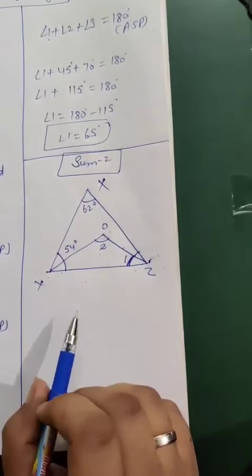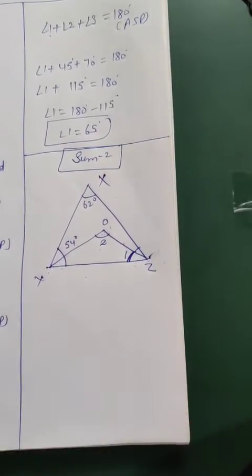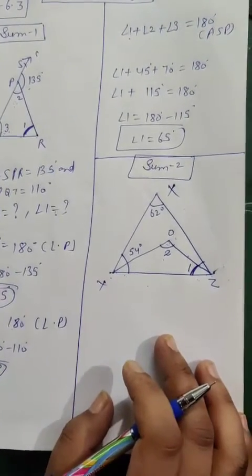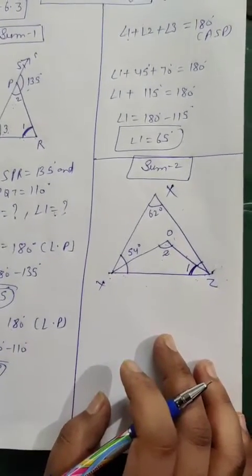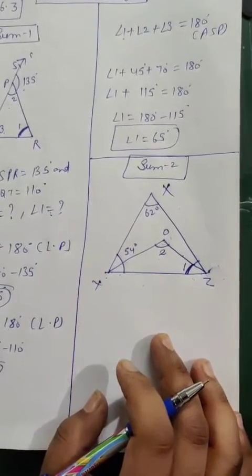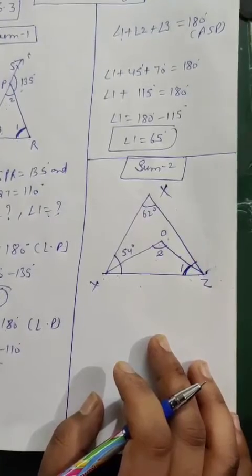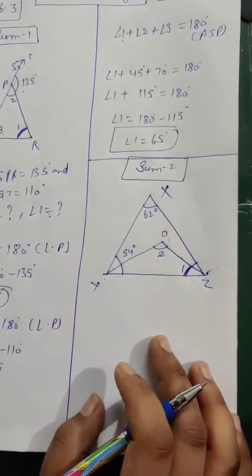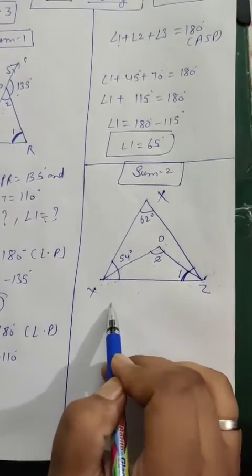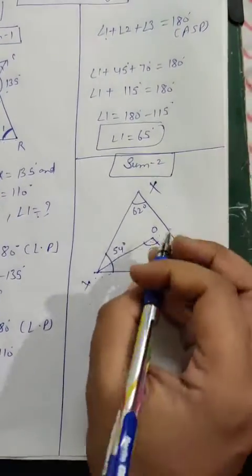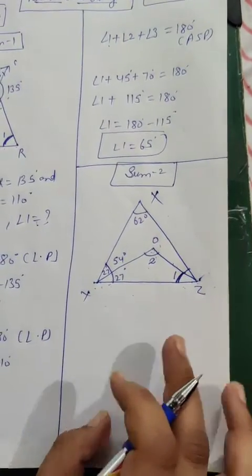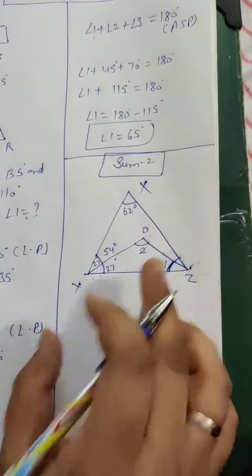Let's see how to solve this question. We have to find angle 1 and angle 2, YOZ and OZY. First, understand the term bisector. Whether it is a side bisector or an angle bisector, it divides into two equal parts. Here, YO is the bisector of this entire angle, meaning the full 54 degrees. So this angle is 27 degrees and this angle is also 27 degrees.